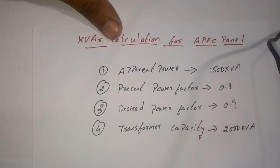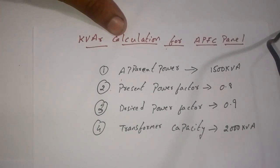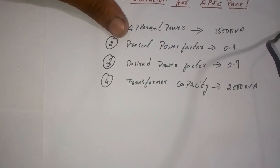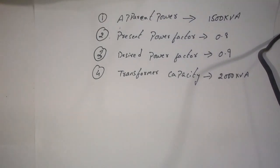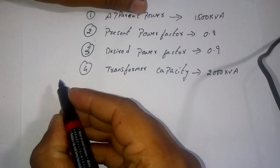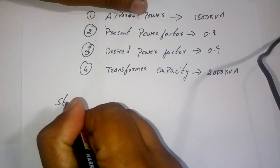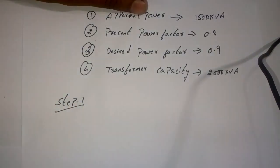The transformer capacity is 2000 kVA. Let us consider this example and try to find out how the capacitor panel calculation is done at site. There are a few steps we have to follow so that we can achieve this task.